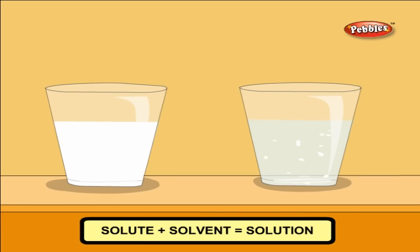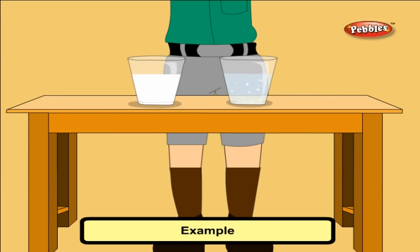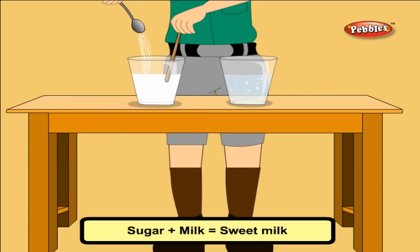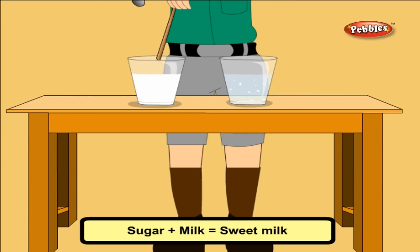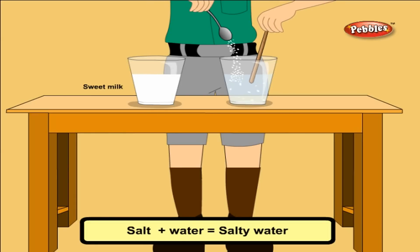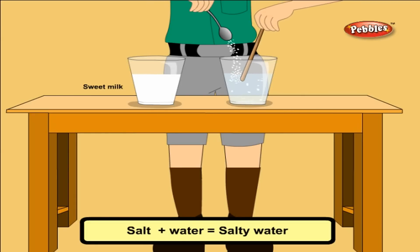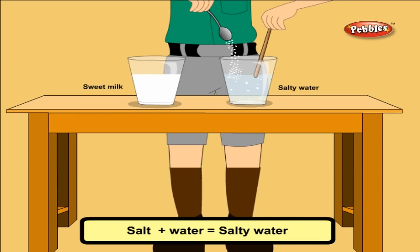Solute plus solvent equals solution. For example: sugar plus milk equals sweet milk. Salt plus water equals salty water.